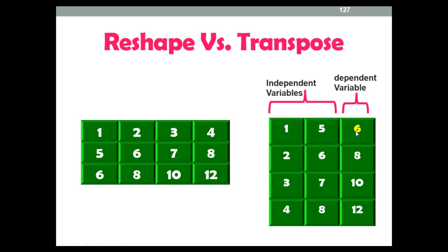So here 6 is the dependent variable which depends on 1 and 5, giving 1 plus 5 equals 6. Similarly, 8 depends on 2 and 6.